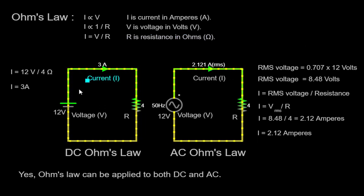On the left side of our simulation, we have a DC circuit with a voltage source of 12 volts and a resistor with a resistance of 4 ohms. On the right side, we have an AC circuit with a voltage source of 12 volts and the same 4 ohm resistor. Join us as we embark on this enlightening journey to unravel the relationship between Ohm's law and DC and AC circuits.